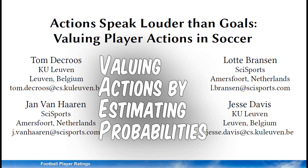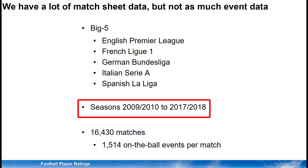To test the ratings we used a dataset consisting of eight seasons of matches from the big five leagues. We have access to a lot more data for calculating top-down ratings, but for bottom-up ratings we need details about on-the-ball events, and this puts some restrictions on the data available to us.